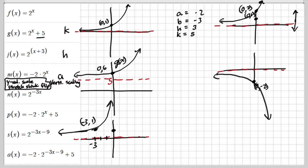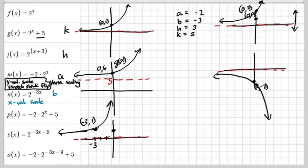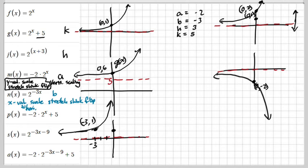Now let's look at B. B is x-value scaling. It's going to do the same thing — it's going to stretch, shrink, or flip — but remember, x-values work horizontally.